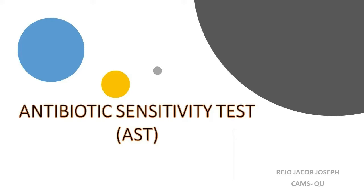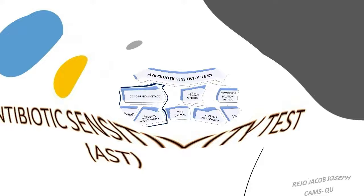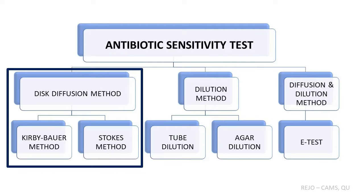In this video, you will learn different methods of antibiotic sensitivity testing and how to perform the disc diffusion test. Antibiotic sensitivity testing is done to choose the antibiotic most effective against a specific type of bacteria or fungus infecting an individual. The different methods include the disc diffusion method, dilution method, and diffusion-and-dilution method. In this video, the disc diffusion method will be explained, which includes the Kirby-Bauer and Stokes methods.